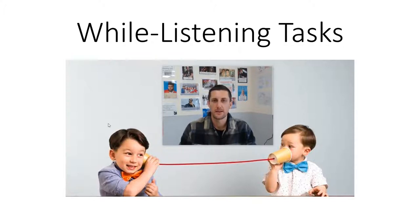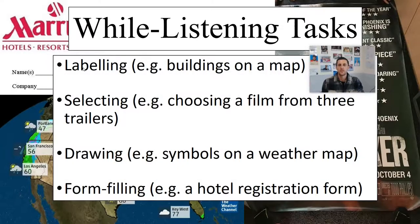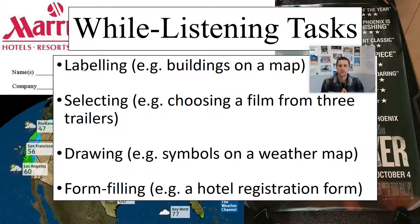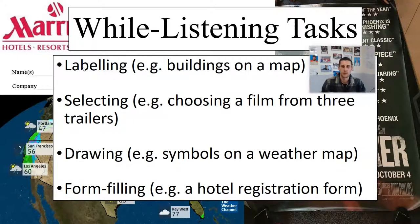It's oftentimes very common to provide comprehension questions or something to fill in the blank when doing a while-listening task. But I think we can be more creative than that. For example, you could give students a map and while listening to a given text — perhaps for directions — they could have to label buildings or draw a line to show the path that the person took.